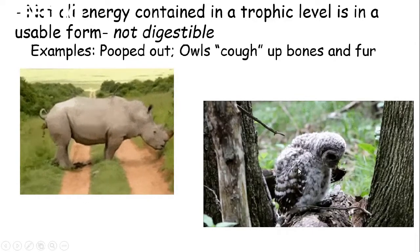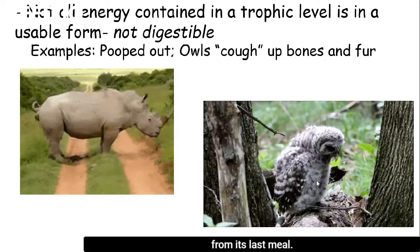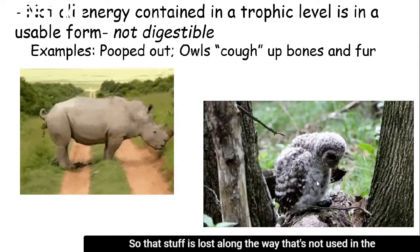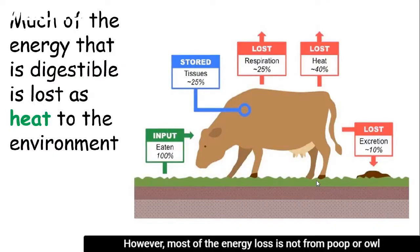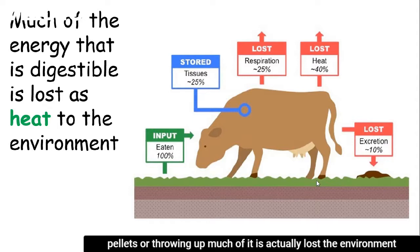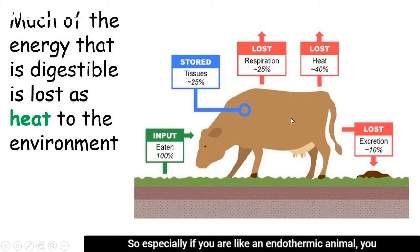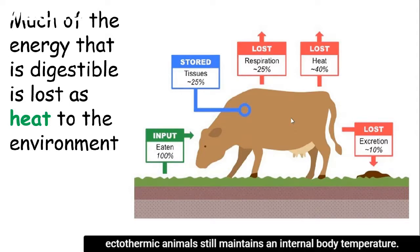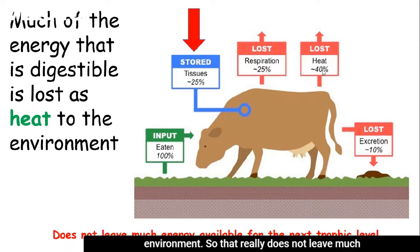Or like this owl — we'll look at owl pellets later on in this unit. It is coughing up remnant bones and fur from its last meal, so that material is lost along the way and not used in the next trophic level. However, most of the energy lost is not from poop or owl pellets. Much of it is actually lost to the environment in the form of heat. Whether you are an endothermic or ectothermic animal, a lot of that heat is lost from the body to the environment.